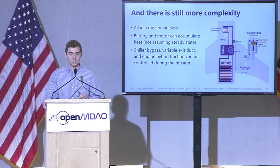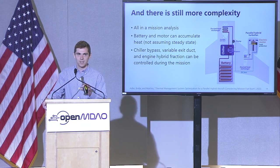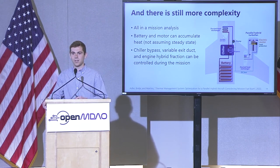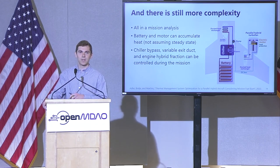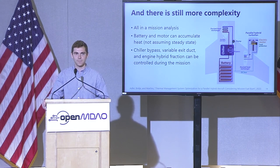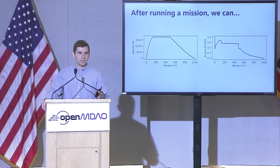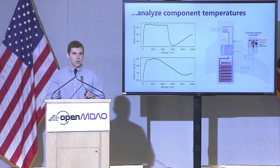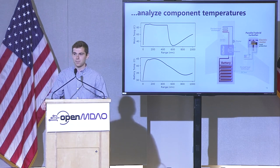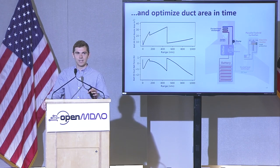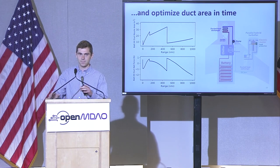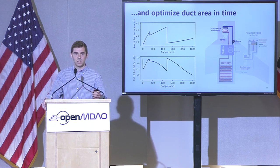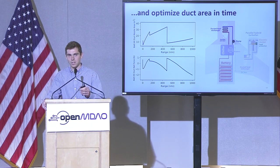We do some rudimentary trajectory optimization — we can change how the power of the chiller changes over the mission, change the exit area of that duct for dumping battery heat, and change the amount of electricity going to the electric motor, effectively changing how hybrid this motor is. Running this mission analysis, you can see the altitude profile and throttle on the right side. After this, we can look at things like motor temperature — top of climb tends to be a critical point — and battery temperature similarly. You can also look at how changing the area of the battery ducted heat exchanger changes even the thrust on the heat exchanger.